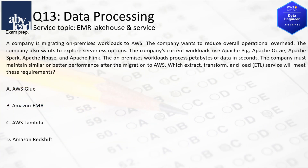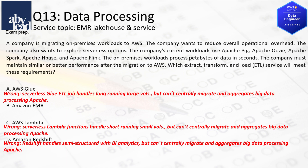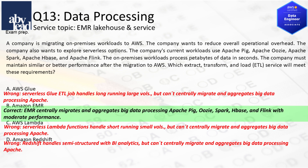Question 13: How do you migrate petabytes of Apache Pig, Oozie, Spark, HBase, and Flink workloads to reduce overhead? You can't centrally migrate and aggregate big data processing with Glue ETL Job, Lambda Functions, or Redshift. Most advisable is to migrate with EMR and aggregate big data processing for Apache.